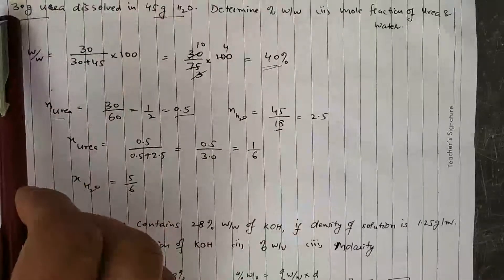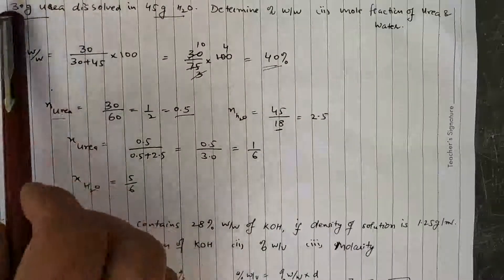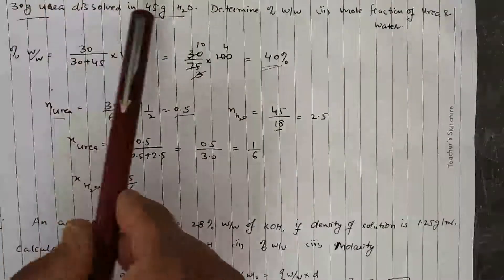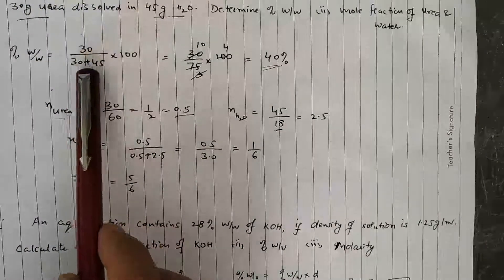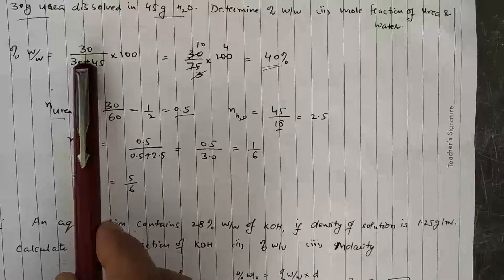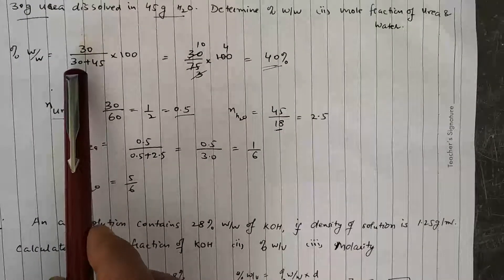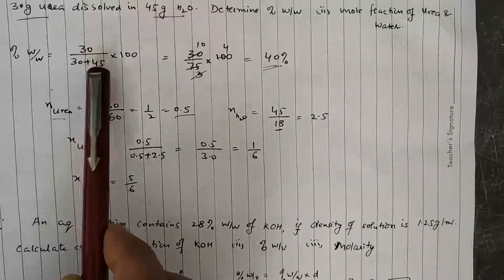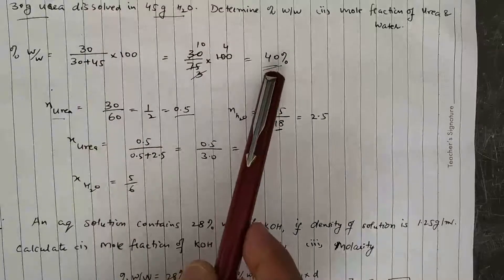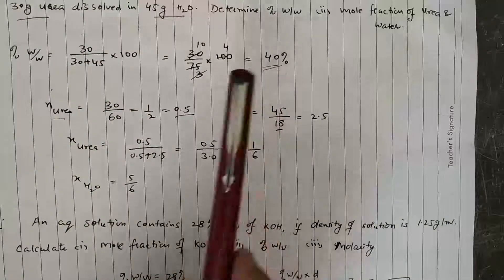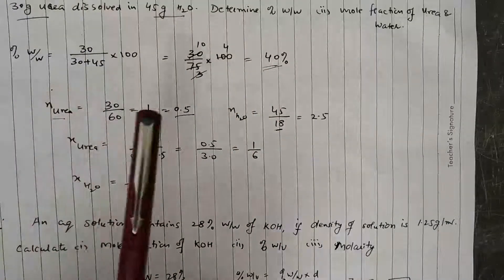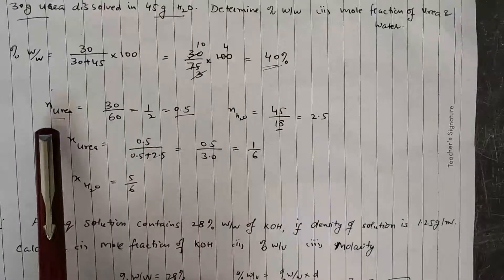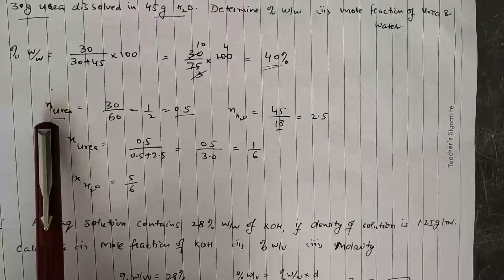So the calculation is 30 divided by (30 + 45), which gives us 40 percent. Now for mole fraction, we have to calculate the number of moles.